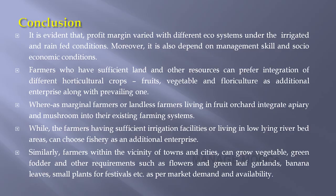While the farmer having sufficient irrigation facility or living in low-lying river bed areas can choose fishery as an additional enterprise. Similarly, the farmer within the vicinity of towns and cities can grow vegetable, green fodder, and other requirements such as flowers and green leaf garlands, banana leaves, and small plants for festivals as per the market demand and availability.